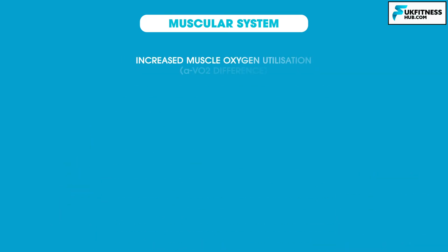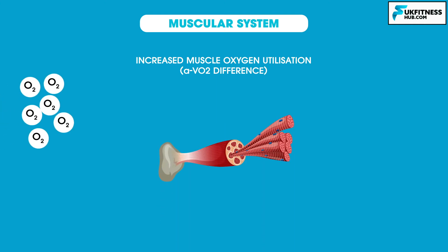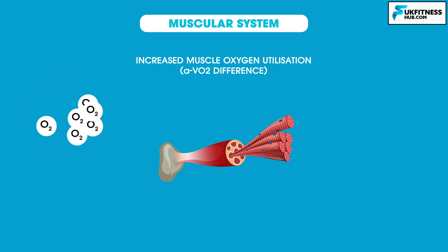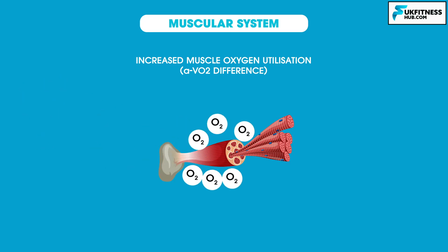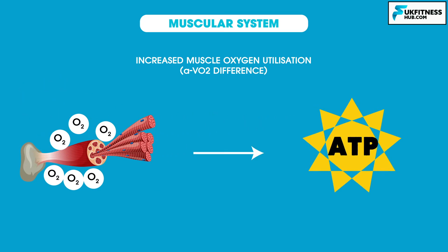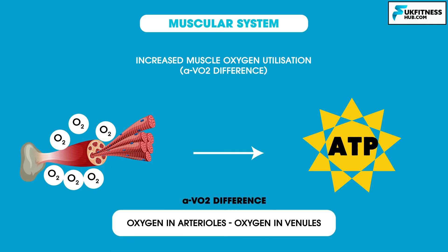Long-term aerobic training also causes increased muscle oxygen utilization. All of the aforementioned factors contribute to the body's ability to attract oxygen into the muscle cells and then use it to produce adenosine triphosphate, known as ATP, for muscle contraction. A measure of this is the difference in the amount of oxygen in the arterioles in comparison to the venules.